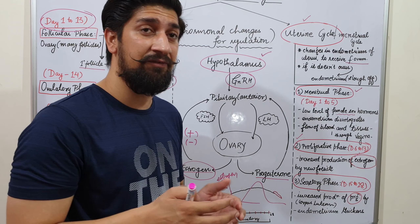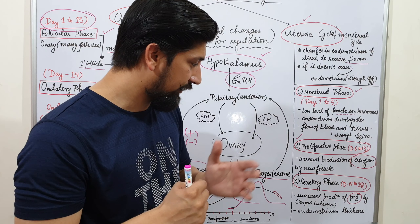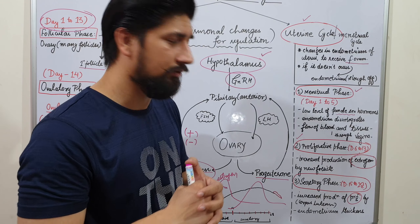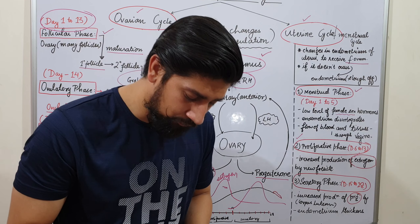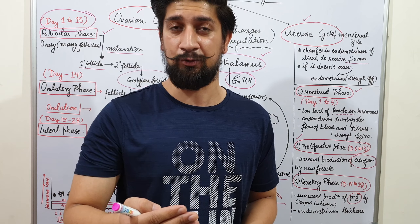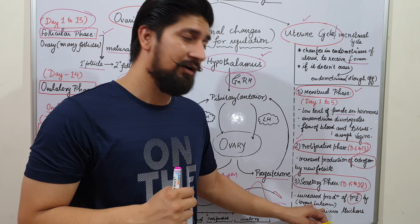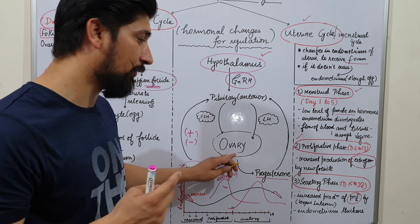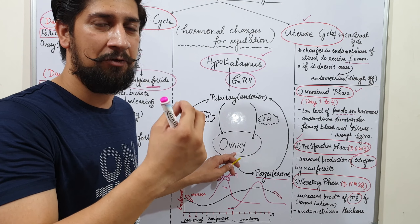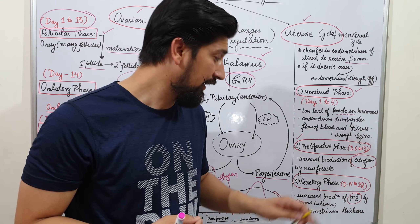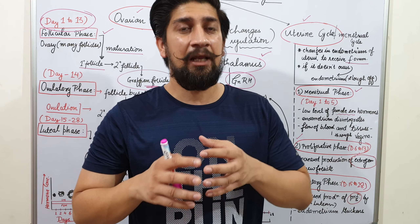Last comes the secretory phase, approximately days 13 to 28, also called the post-ovulatory phase. During this phase, progesterone — the pregnancy hormone — concentration increases while estrogen concentration goes down. Where does progesterone come from? It comes from the corpus luteum — the temporary endocrine gland formed from the Graafian follicle after it releases the ovum. The secretory phase prepares the uterus for the reception of a fresh fertilized zygote.